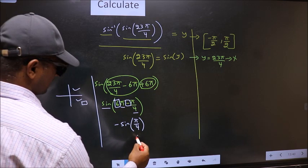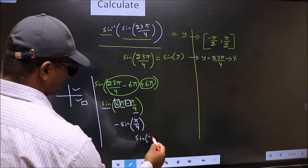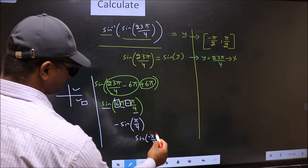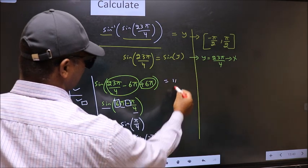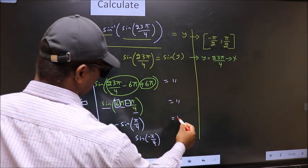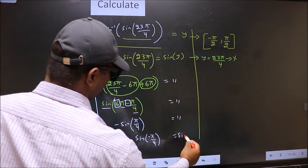Now shift the negative inside. We get sin negative pi by 4. On the other side no change. Equal to sin y.